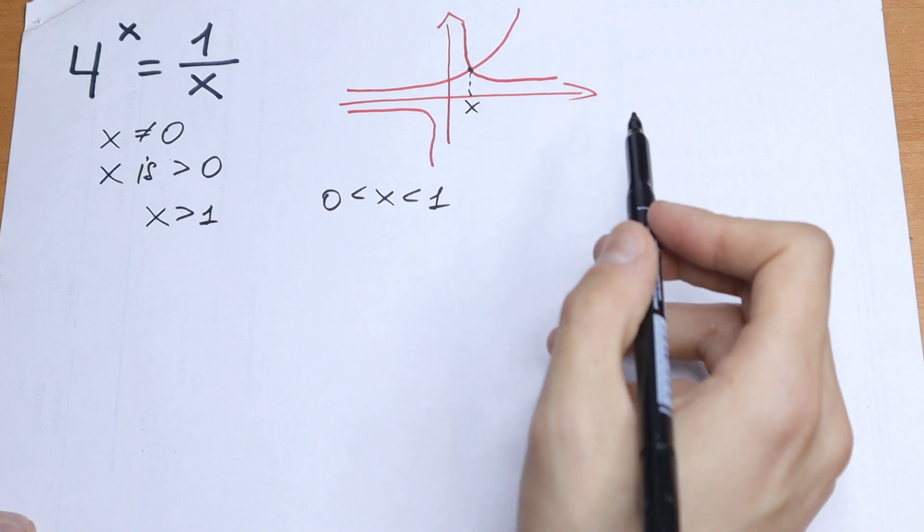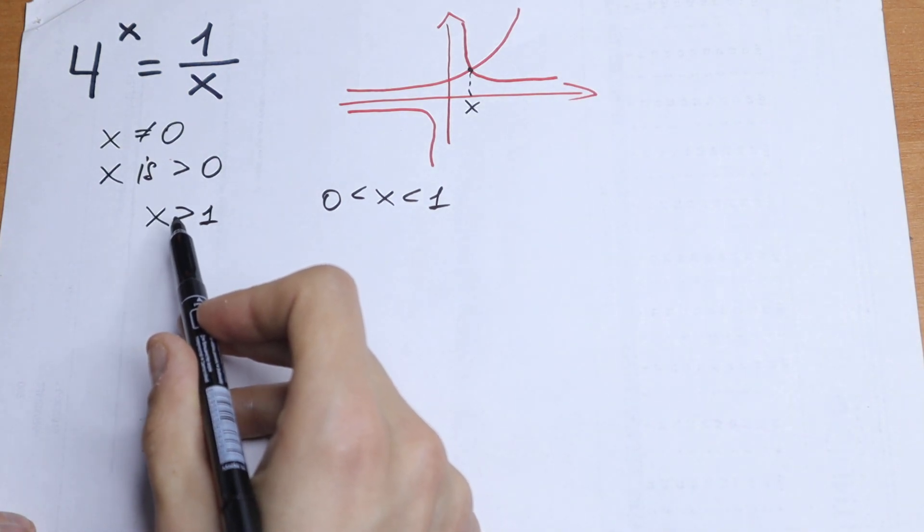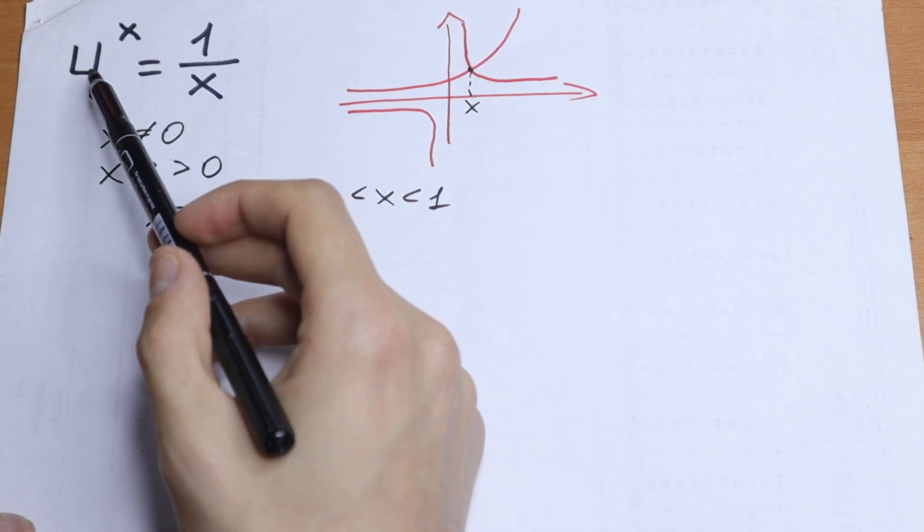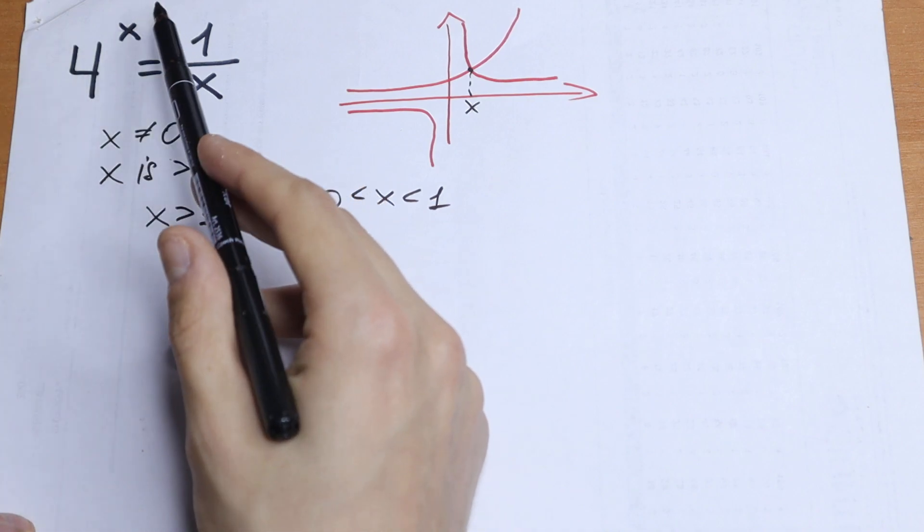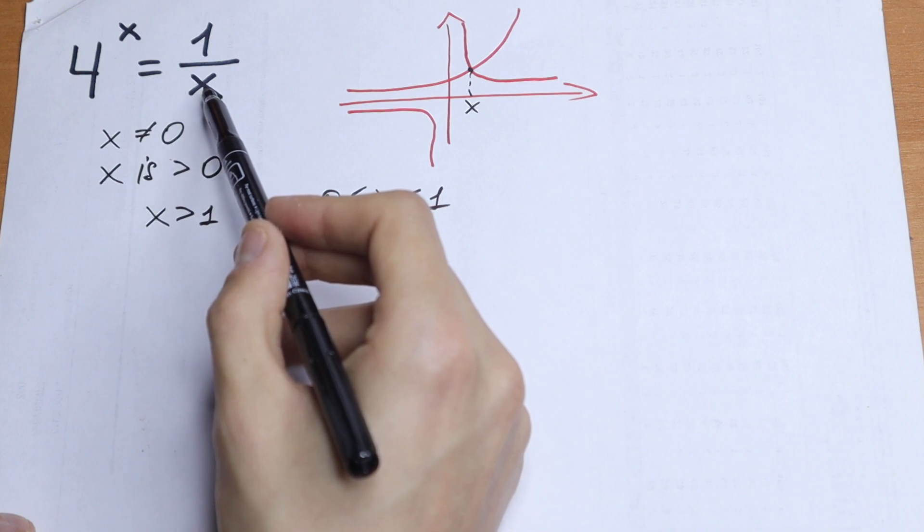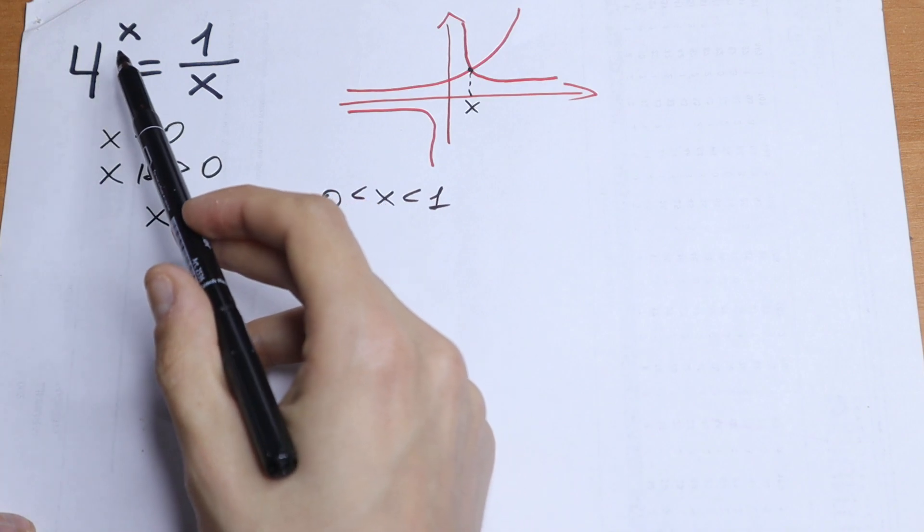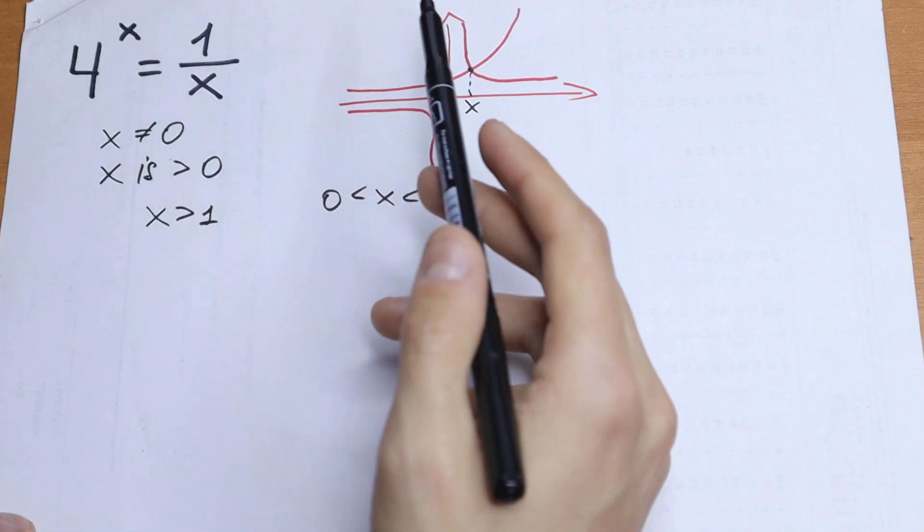So what are we going to do next? If we have x is greater than 1, we will have that this function is increasing always and this will be decreasing always. So in that case our exponential equation does not have any roots.